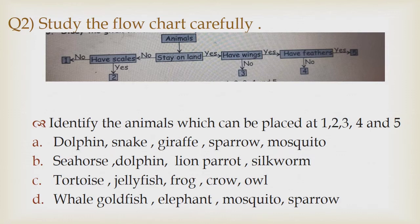Option C: Tortoise, jellyfish, frog, crow, owl. Option D: Whale, goldfish, elephant, mosquito, sparrow.